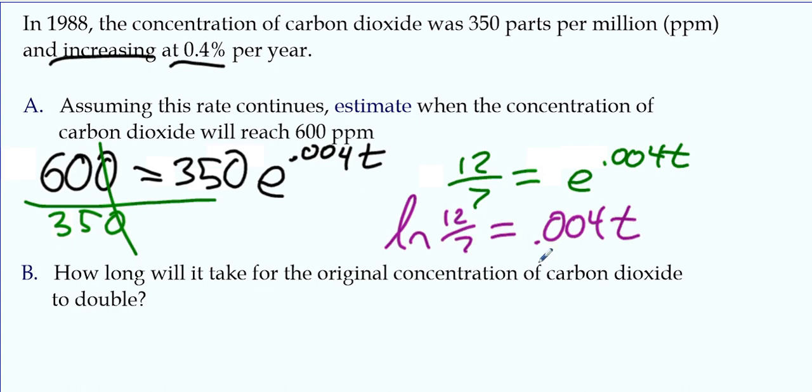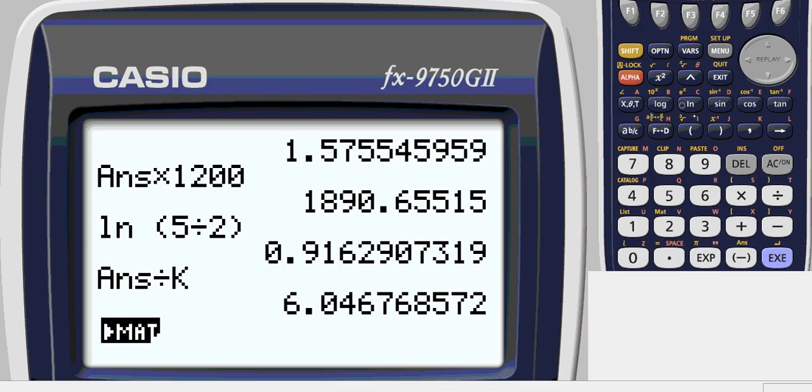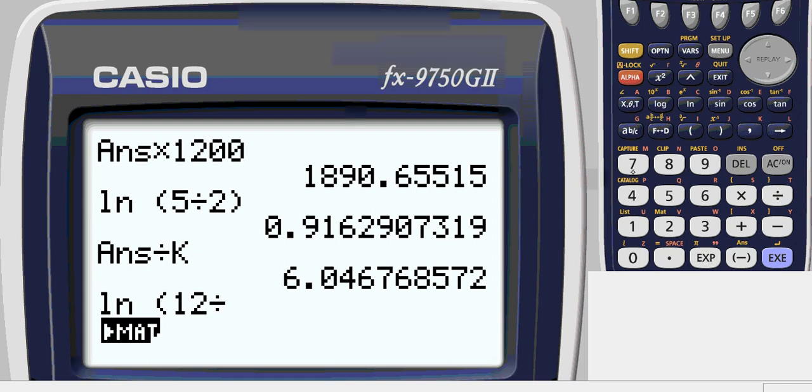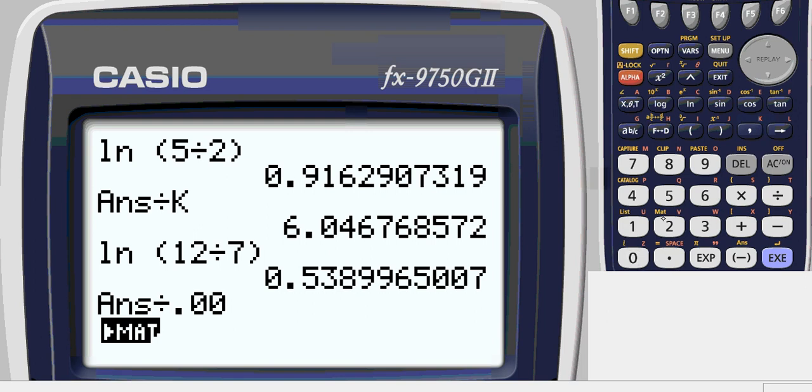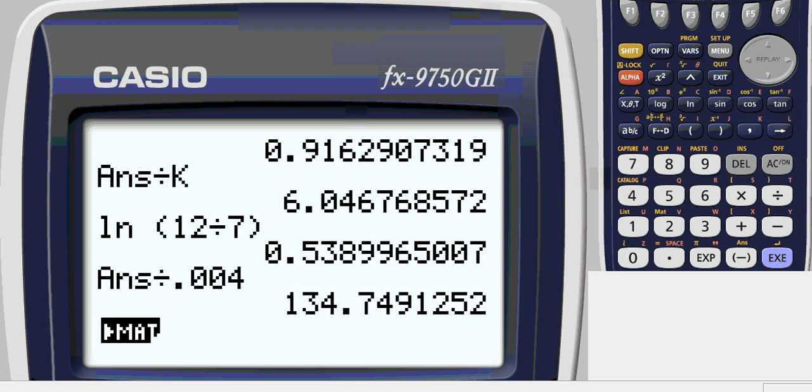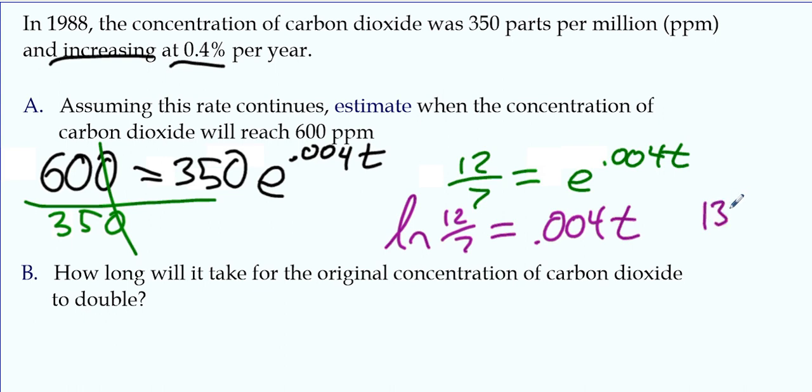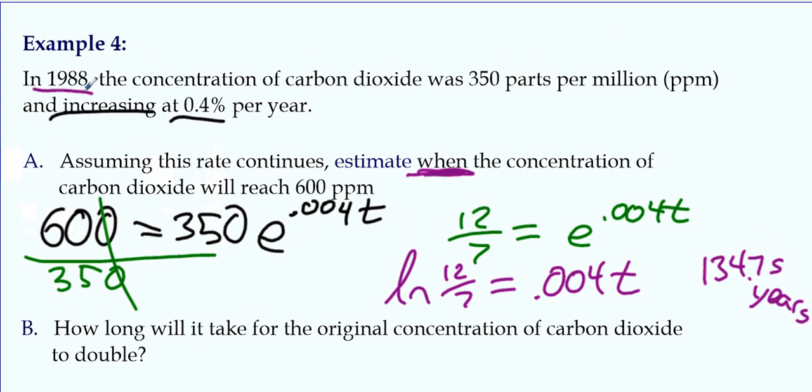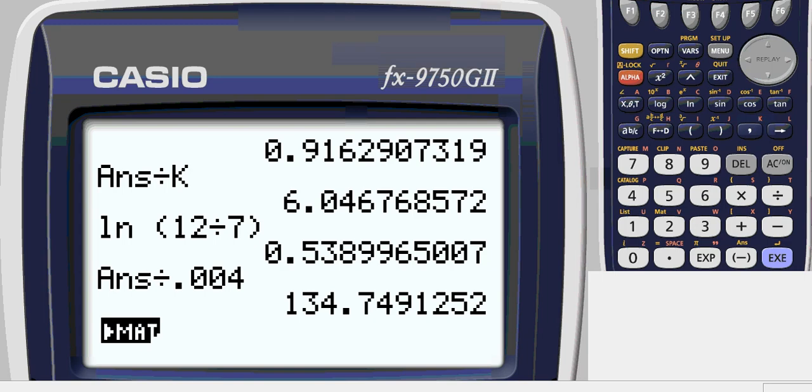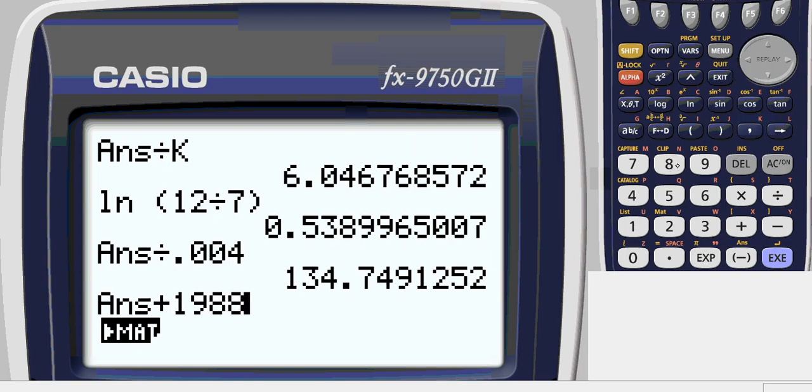And we'll get whatever that decimal is from our calculator and divide by 0.004. And it's going to take 134.75 years. Now, since it says when, whenever it says when, you should tell the year that it actually happens. So since this started in 1988, add 134 years to that, or add 1988 to our answer.